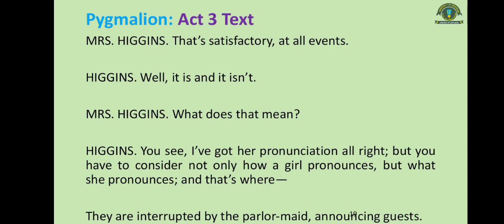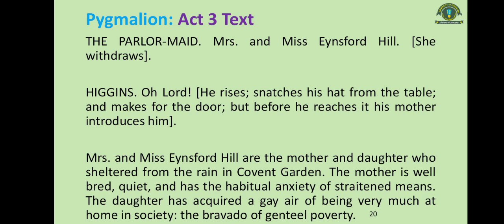Mrs. Higgins says 'That's satisfactory at all events.' Higgins replies 'Well, it is and it isn't.' She asks what he means. He explains: 'You see, I have got her pronunciation all right, but you have to consider not only how a girl pronounces but what she pronounces — and that's where the difficulty lies.' They are then interrupted by the parlor maid announcing guests. The parlor maid is the maid who attends to guests.